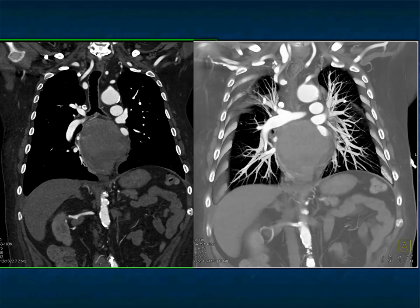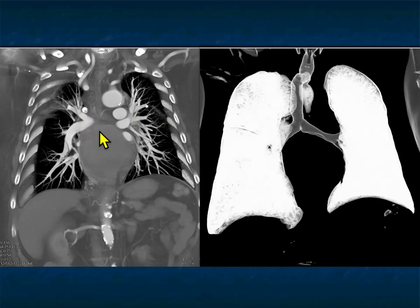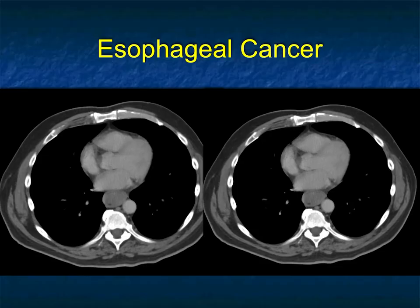This bulky tumor is unusual for how large it is without causing more obstruction. On the 3D rendering and virtual bronchoscopy you can see it compressing the undersurface of the left main stem bronchus and extending by the pulmonary arteries. When esophageal cancer gets larger, it can invade the pulmonary arteries.